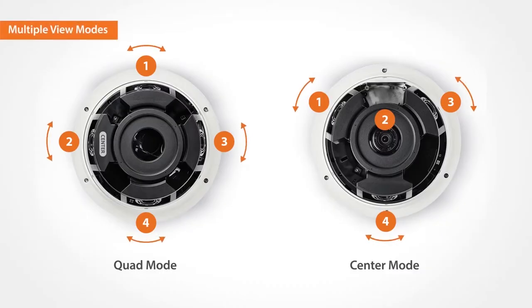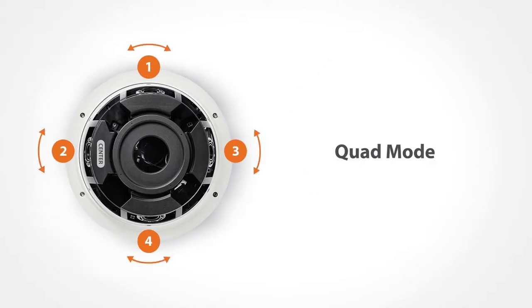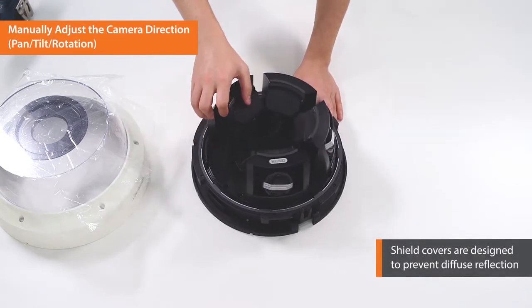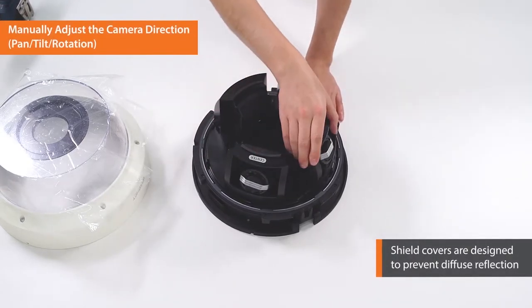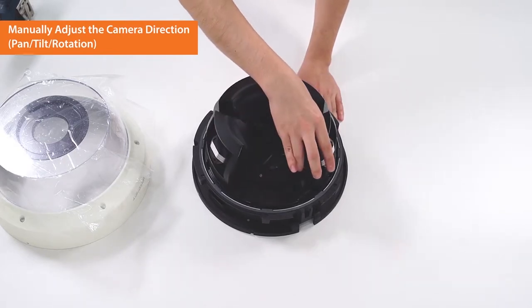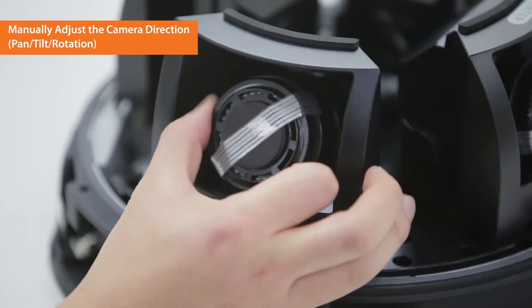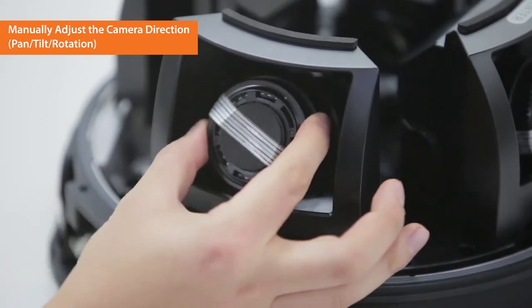Both quad and center modes are available to install. First, let's have a look at the quad mode. You can manually adjust the camera lenses. Shield covers are designed to prevent diffuse reflection. The four lenses can be individually set up for panning, tilting, or rotating depending on the environment.